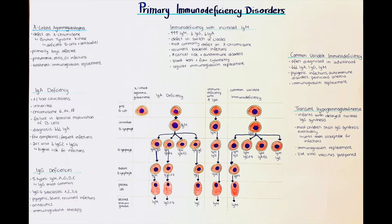This gene normally encodes Bruton tyrosine kinase, and this tyrosine kinase is important for the development and maturation of B cells. So patients with this disease present with a lack of B cells and therefore also a lack of antibodies. Since it is X-linked, boys are primarily affected.